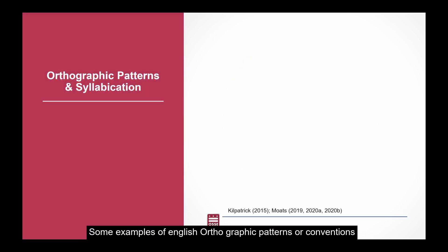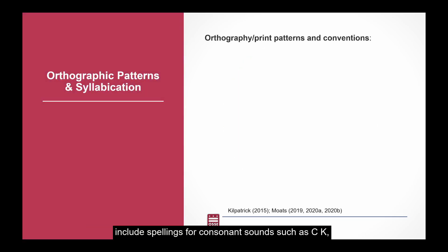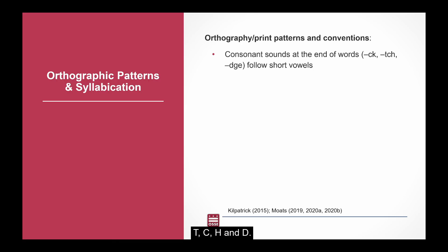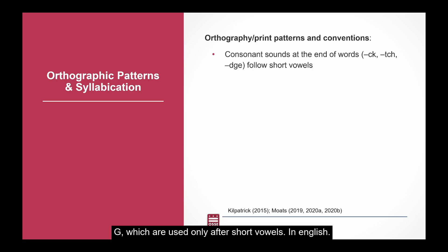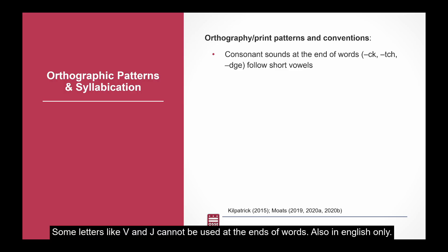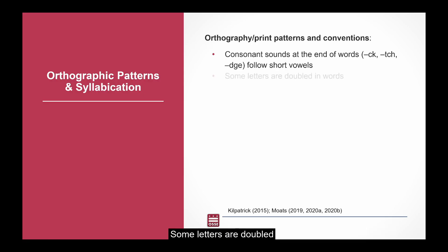Some examples of English orthographic patterns or conventions include spellings for consonant sounds such as CK, TCH, and DGE, which are used only after short vowels. In English, some letters, like V and J, cannot be used at the ends of words. Also, in English, only some letters are doubled.